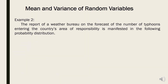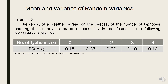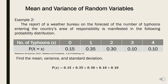Example number 2: The report of a weather bureau on the forecast of the number of typhoons entering the country's area of responsibility is given in a probability distribution. This problem is from the book of Guzman, Statistics and Probability. We first verify that the sum of probabilities equals 1: 0.15 + 0.35 + 0.30 + 0.10 + 0.10 = 1. We can now proceed to compute the mean, variance, and standard deviation.